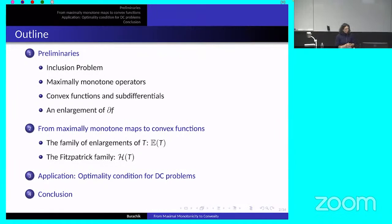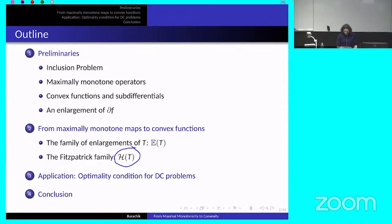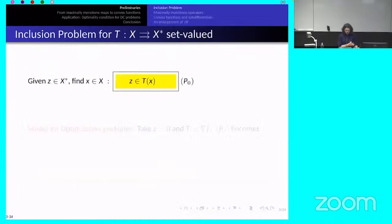In the last part of the talk, I will discuss an application of the family of convex functions — now called the Fitzpatrick family — and explain how this family can be used to define a whole new family of distances between point-to-set maps, one of which is maximally monotone, with a short application to difference-of-convex problems and how to use these distances to characterize global solutions.